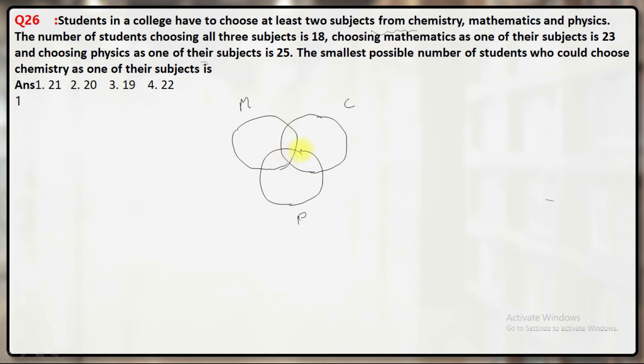The number of students choosing all three subjects is 18, so this part becomes 18. Choosing mathematics as one of their subjects is 23, choosing physics as one of their subjects is 25.